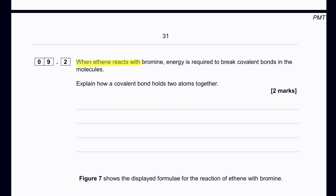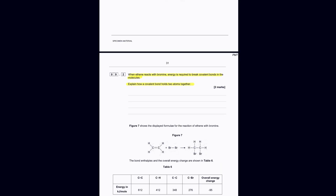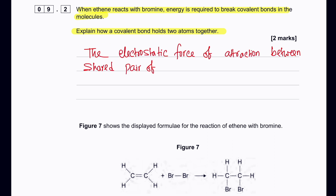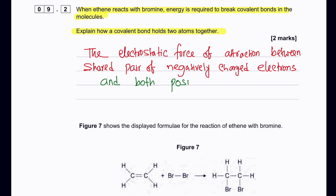When ethane reacts with bromine, energy is required to break the covalent bonds. Explain how a covalent bond holds two atoms together: electrons are shared between two atoms, and the electrostatic force of attraction between the shared pair of negatively charged electrons and the positively charged nuclei of both atoms holds the bond together.